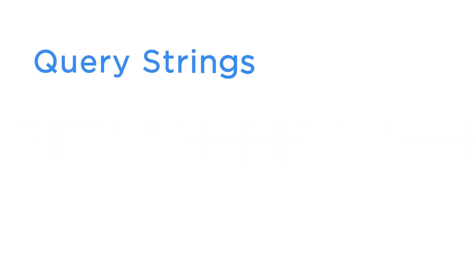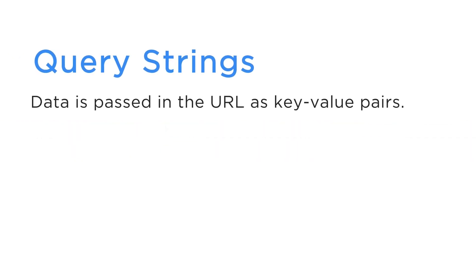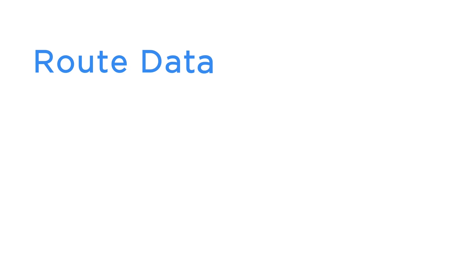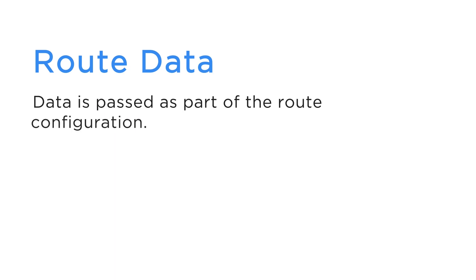You can pass them using query strings, and in this case the data is passed in the URL as key value pairs. You can also pass them using route data, and in this case the data is passed as part of the route configuration.